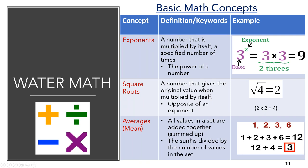There are a few basic math concepts to be familiar with because we use them so often. The first is an exponent — a number that is multiplied by itself a specified number of times, also known as the power of a number. For example, if you have three squared, the number three is the base and the number two is the exponent. This is simply three multiplied by three — two threes multiplied together — giving an answer of nine.